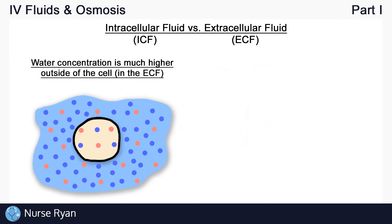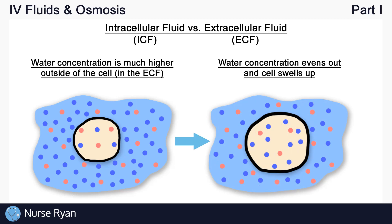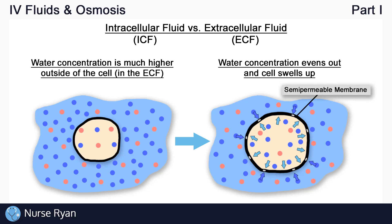So we have our cell here with a high water concentration in the extracellular fluid. You can see that the cell will react to the changes happening on the outside — in this case by swelling up with water. The water concentration likes to stay the same, so the extra water on the outside is getting inside, causing the cell to grow, and it can actually burst if it grows too much. This is because the cell has a protective outer membrane known as a semi-permeable membrane. Semi-permeable means that some substances, like water, can easily pass through it.